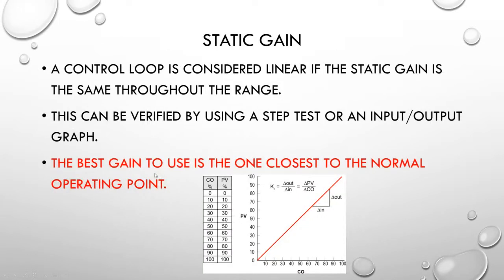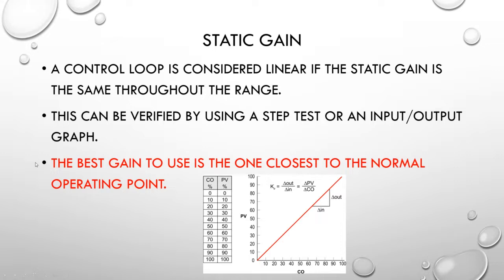We largely define it by static gain, but static gain is just one component of the transfer function. When we're talking about a load disturbance, it affects the process and as a result affects the transfer function for the process, whereas a set point change doesn't do that quite as much. We'll have a look comparing load changes to set point changes.